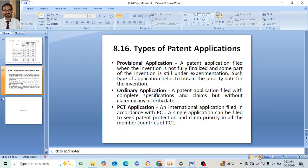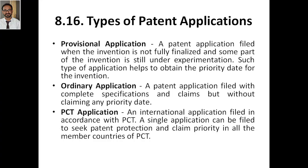Hello everyone, welcome to my YouTube channel. Today's class, let's discuss the types of patent applications. There are many types: we have the provisional application, the complete application, also called the ordinary application, and the PCT application for international applications. We have already studied these. A provisional application is one filed without fully explaining or describing your work, and within one year you have to go for the complete application.